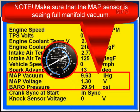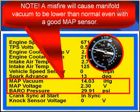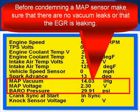Special note: make sure the MAP sensor is seeing full manifold vacuum. When you test it electrically and it tests okay, disconnect the MAP sensor vacuum hose from its source and measure it right there to make sure it's not carbon in the nipple. Another note: misfires can cause manifold vacuum to be lower than normal even when the MAP sensor is good. So if you have misfires and you're trying to test a MAP sensor versus vacuum, you're going to see problems — be aware that a misfire is going to cause manifold vacuum to be lower than normal and the MAP sensor should reflect that. Before condemning a MAP sensor, make sure there are no vacuum leaks or that the EGR is not leaking, as either one can affect MAP sensor readings.